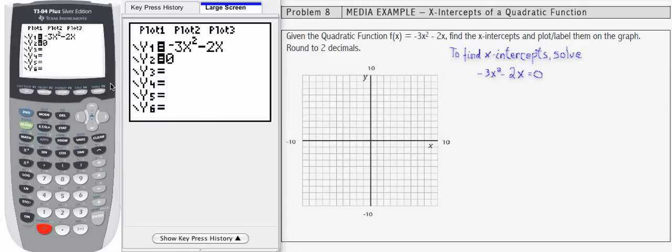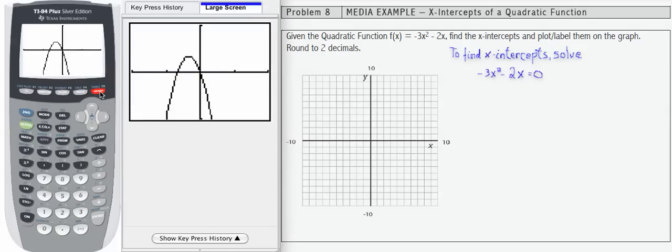We've got our two equations entered into y1 and y2. We can hit graph to make sure that the intersection appears in the window. It's hard to see because here's the equation for y equals 0. So this is y2. Y1 is the equation here.